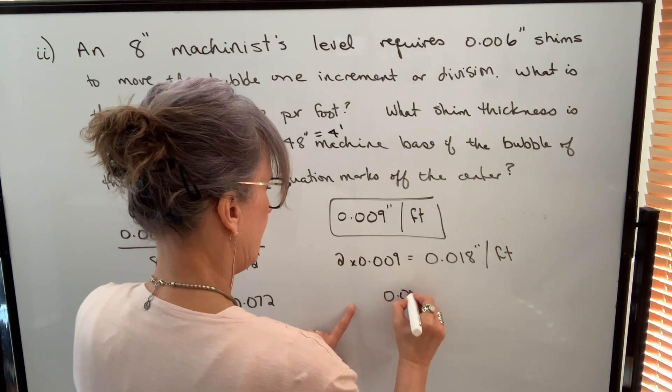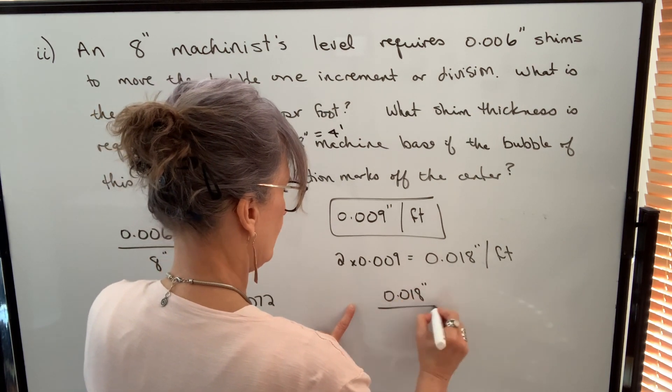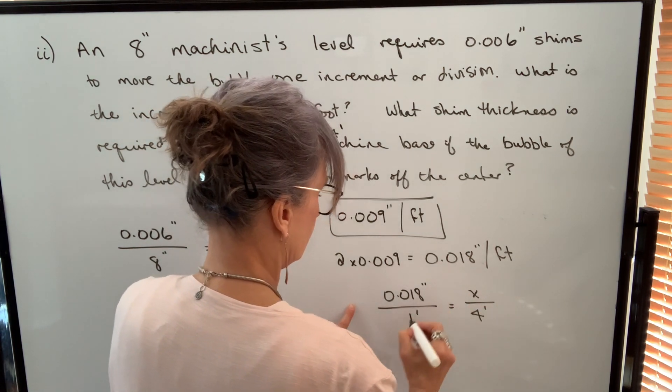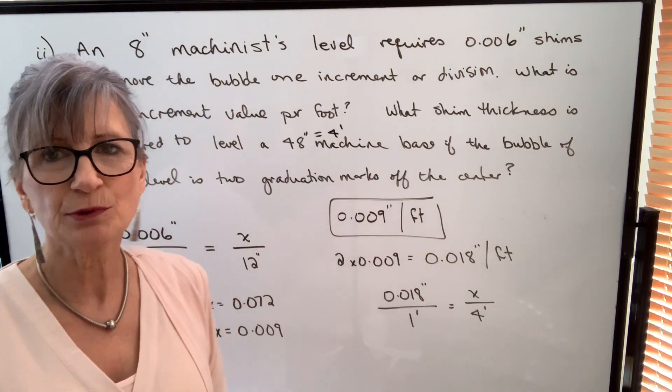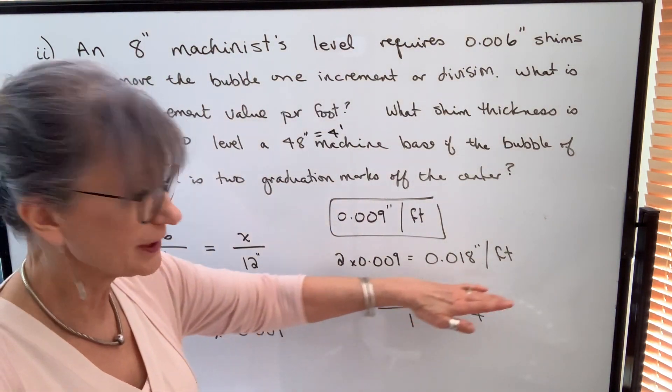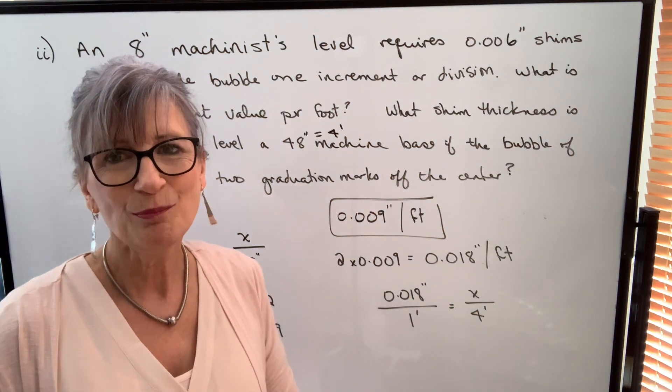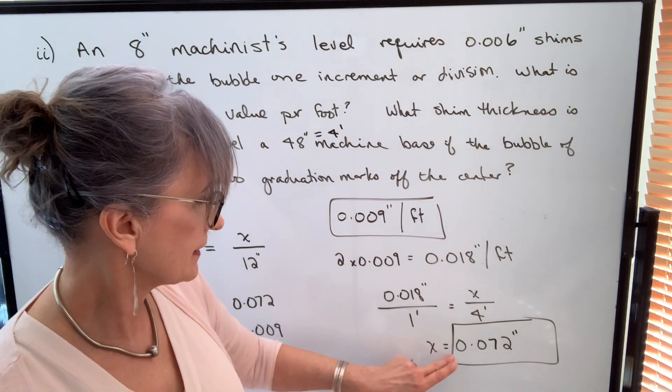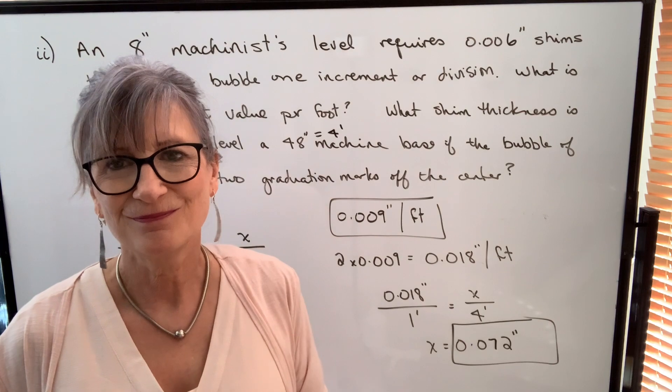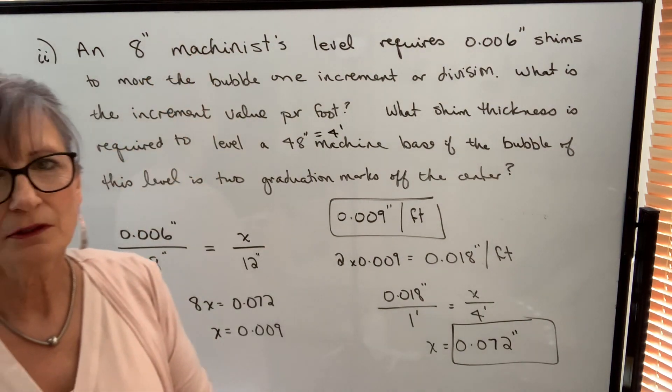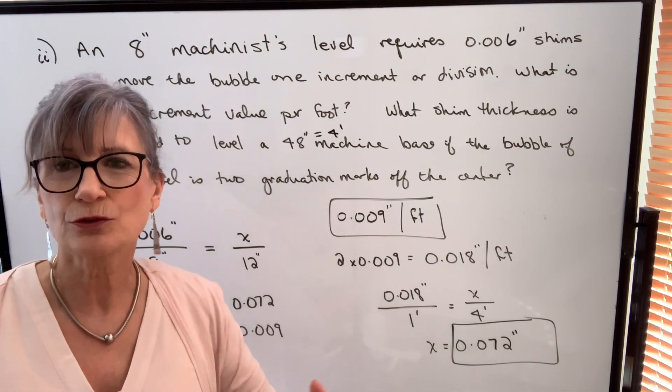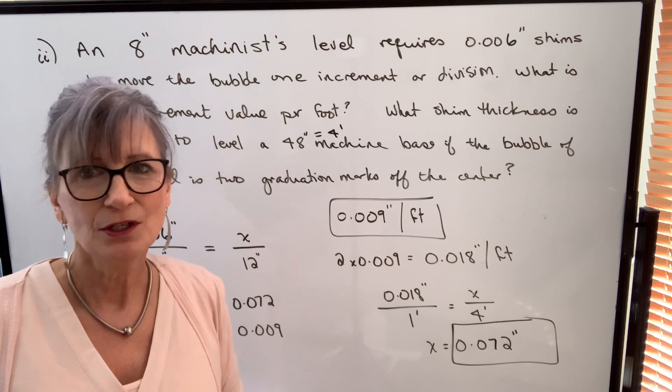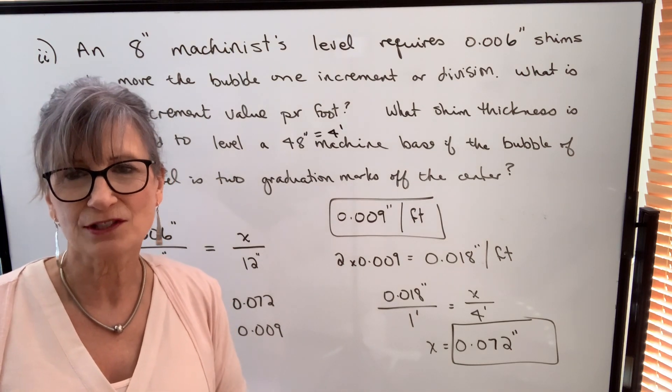So I set up my proportion, 18 thousandths of an inch over one foot has to be the same ratio of how much over four feet. We can ignore our units when we're cross multiplying. It's a good idea to know that the units are consistent, that's why I put them in, but you don't need them in there to do the math. When we cross multiply, we get x equals 72 thousandths shims. Machinist level typically comes in 6 inch or 8 inch or 12 inch lengths. So when you have a situation like this, you do have to pay attention to the length of the level.